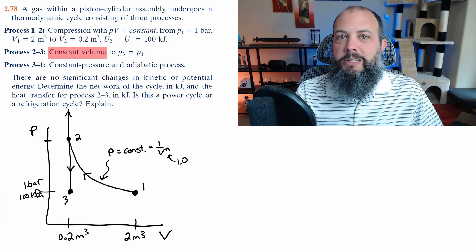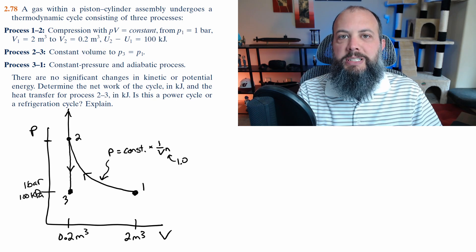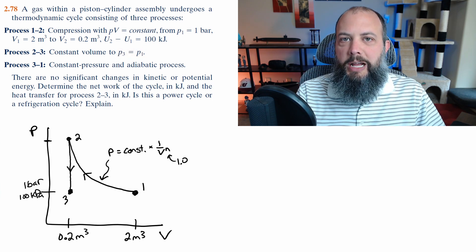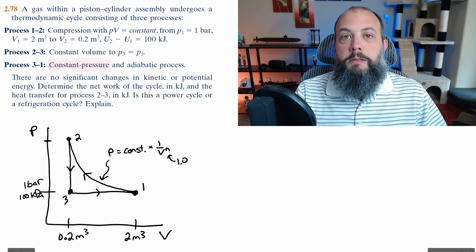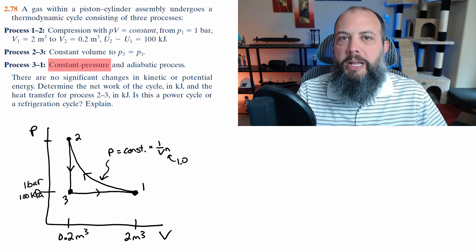Process two to three says that it's a constant volume which tells you that it's going either straight down or straight up to stay at that volume but since it's also given that P3 equals P1 I can erase that upper line and just know that it's going down. Then process three to one says it's a constant pressure so that goes straight to the right back to point one.